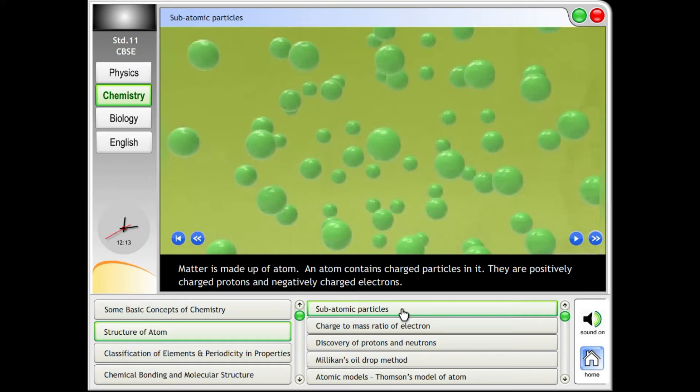Subatomic particles. Matter is made up of atoms. An atom contains charged particles in it. They are positively charged protons and negatively charged electrons.